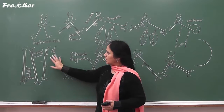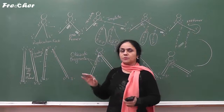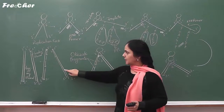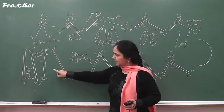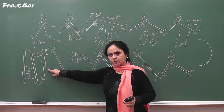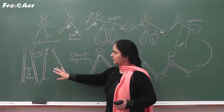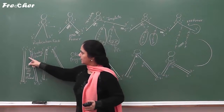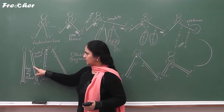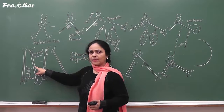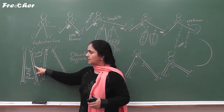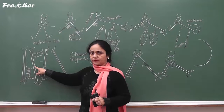DNA replication is known as semi-discontinuous because one strand is produced continuously and one DNA strand is produced discontinuously. This new DNA molecule and another new DNA molecule each conserve only one parental strand, therefore DNA replication is known as semi-conservative.